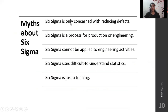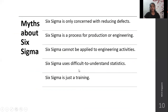Myths about Six Sigma. Six Sigma is only concerned with reducing defects — no, it is also concerned with reducing wastage. Six Sigma is a process only for production or engineering — no, in every and any industry you can use Six Sigma. Six Sigma cannot be applied to non-engineering activities — it can be. Six Sigma can be applied to any activity which has a process in place and produces an end result in the form of a product or service.